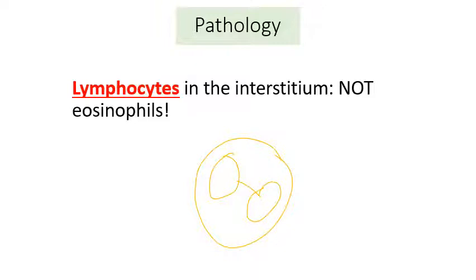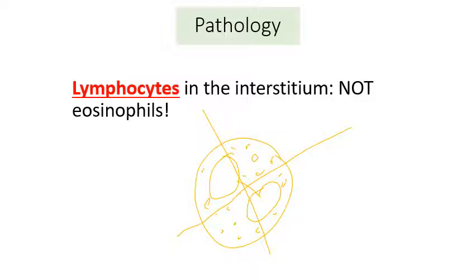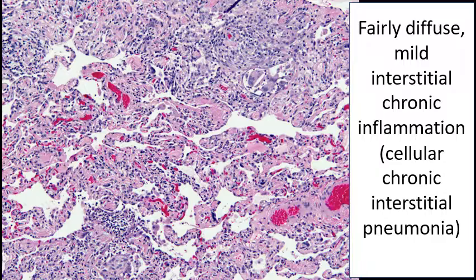Medical students are often taught that in hypersensitivity phenomena — in the skin or respiratory tract — eosinophils come into the affected tissue, as in type 1 hypersensitivity. But in hypersensitivity pneumonitis, eosinophils are not the cell of interest. They are not increased in the lung, and on bronchoalveolar lavage they are not found to be increased. It is lymphocytes that are the cell of interest — this really needs to be stressed because eosinophils should not even enter your mind when discussing hypersensitivity pneumonitis.